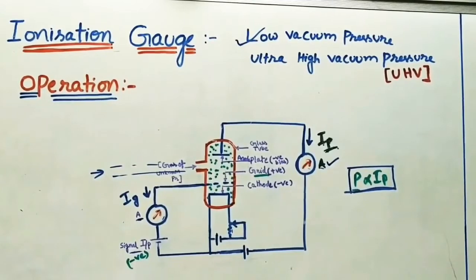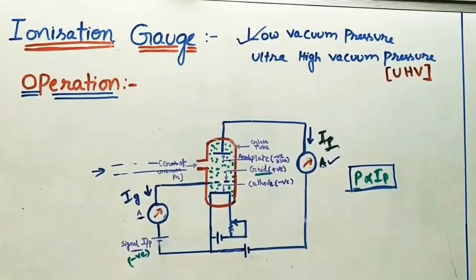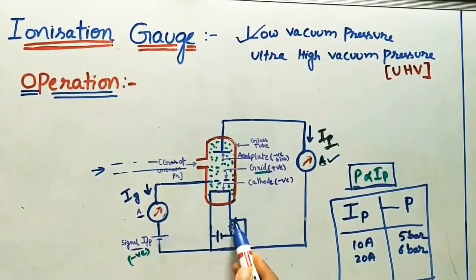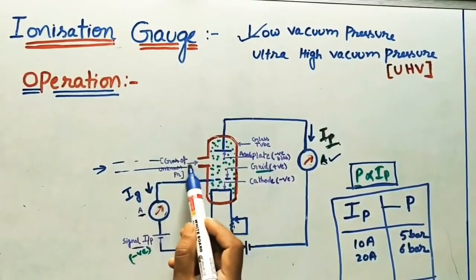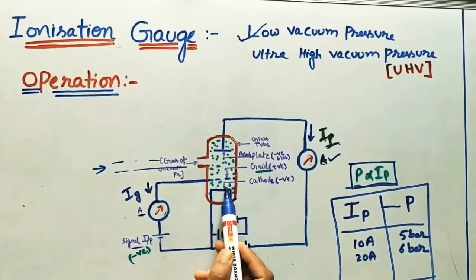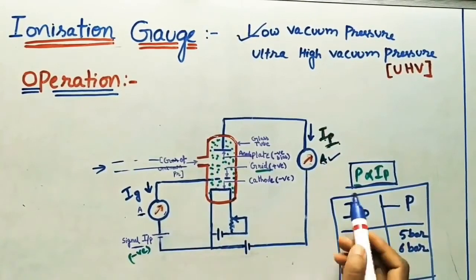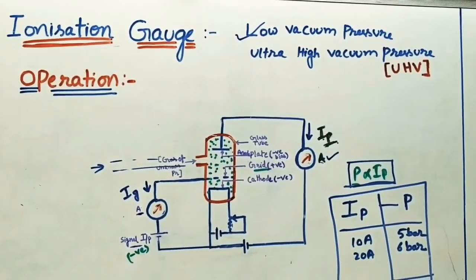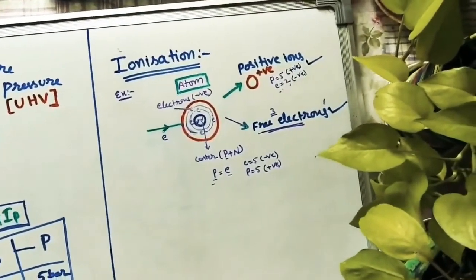The limitations are: the filament will burn frequently, because we are heating it at high temperatures by giving different currents. Also, because we are sending gas into it, the gas will decompose due to the filament temperature — that is the main disadvantage. Additionally, for different gases, we have to prepare different calibrated scales, which is also a disadvantage of this gauge. If you like this video, please subscribe to my channel and share with your friends. Thank you for watching.